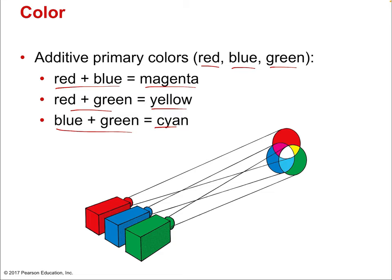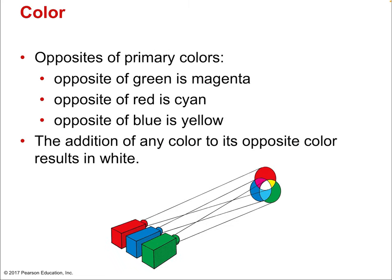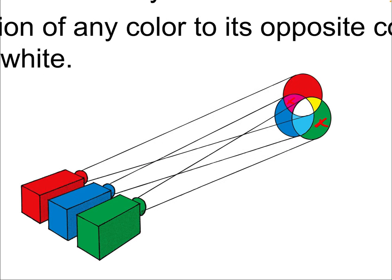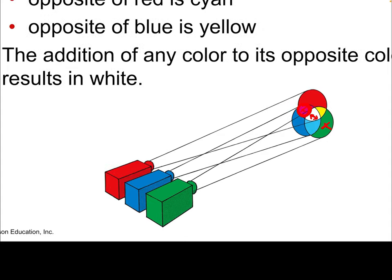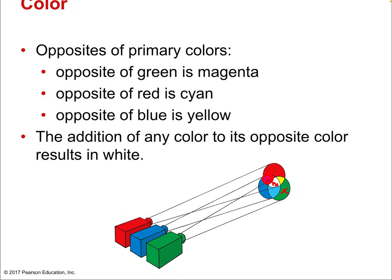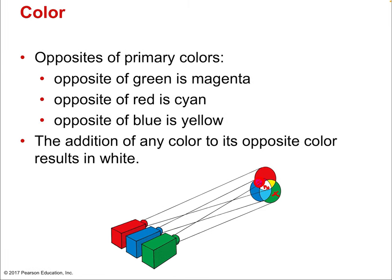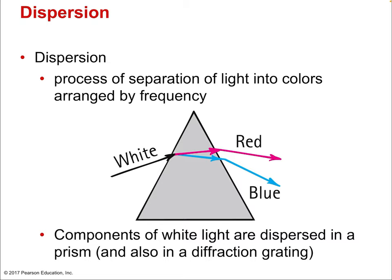The opposite of each primary color: opposite of green is magenta, opposite of blue is yellow, and opposite of red is cyan. They're directly across from each other across the white where they all overlap. The addition of any color and its opposite results in white — for example, adding yellow and blue gives white. Elementary school makes a big deal about primary colors, but magenta, cyan, and yellow are just as important.